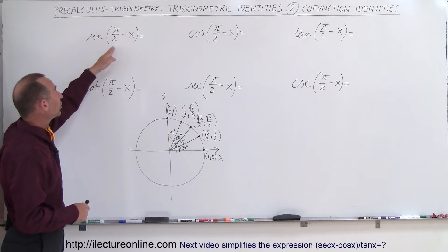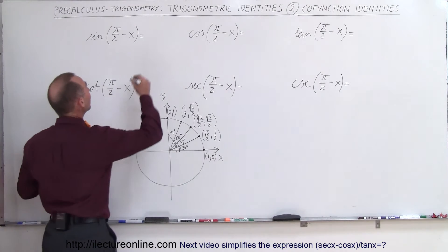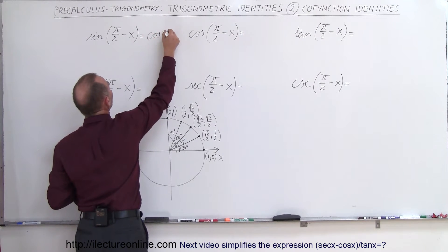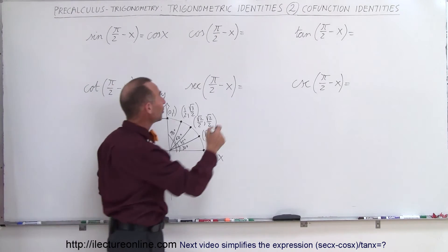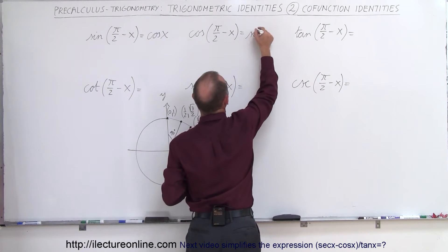And so the sine of 90 degrees minus x is equal to the cosine of x, and the cosine of 90 degrees minus x is equal to the sine of x.